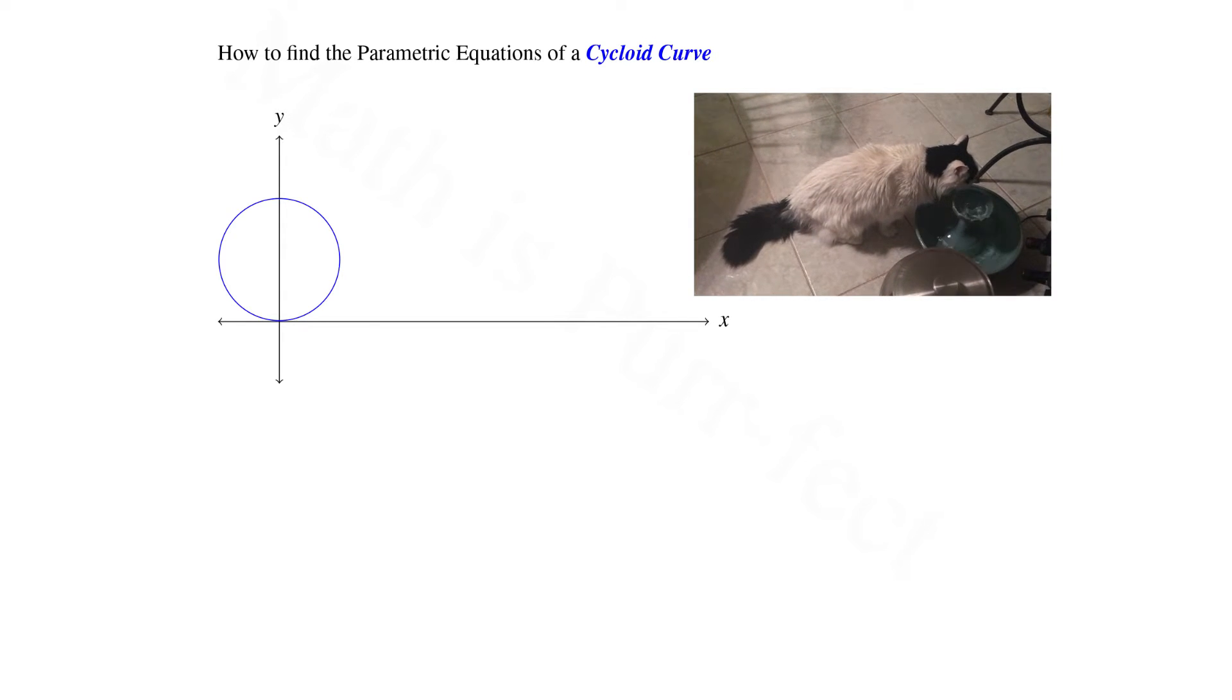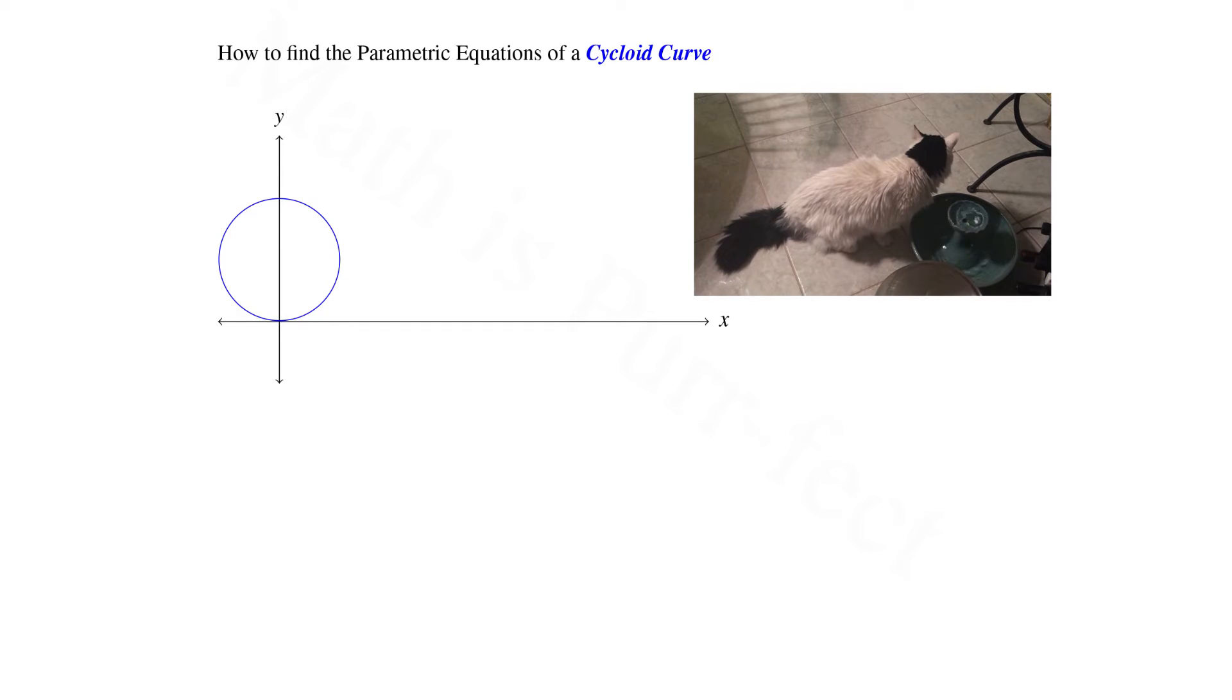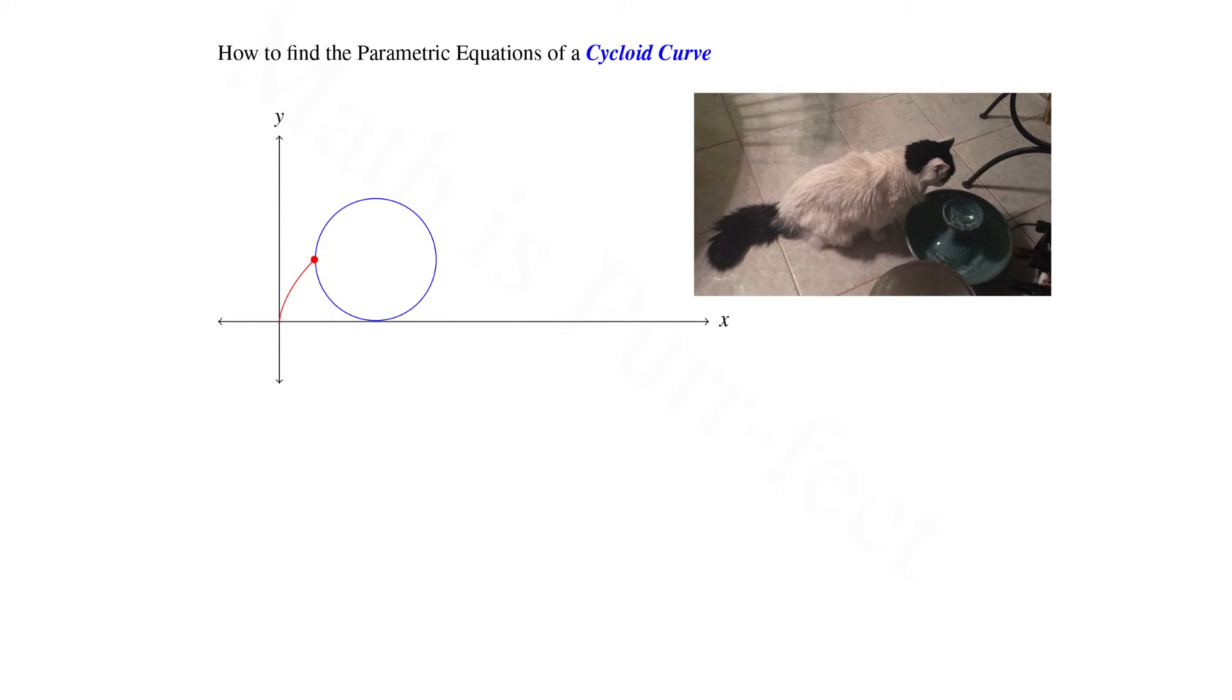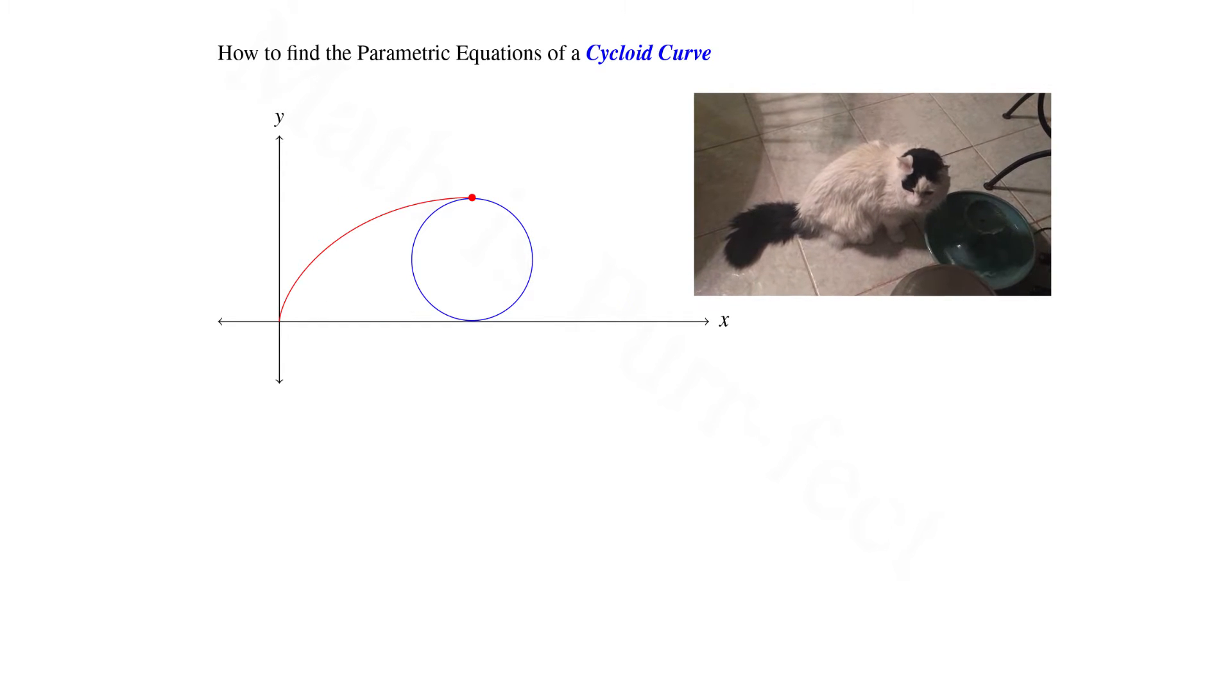In order to create a cycloid curve, we begin with a circle which intersects the origin in the space. Let's indicate that point in red. Now we will slowly rotate the circle along the x-axis and follow the curve traced by that point. The resultant curve is called a cycloid.